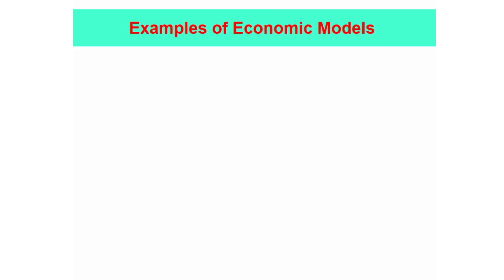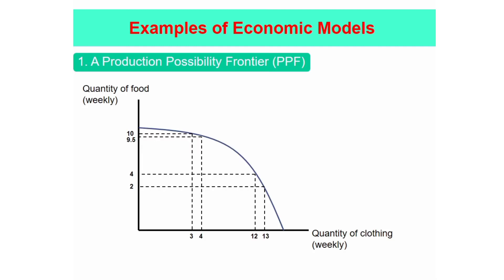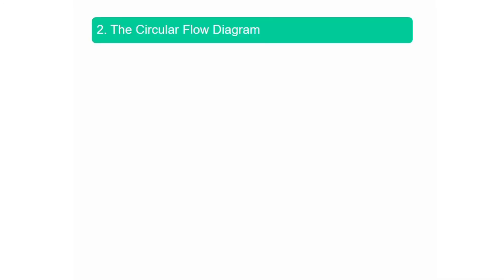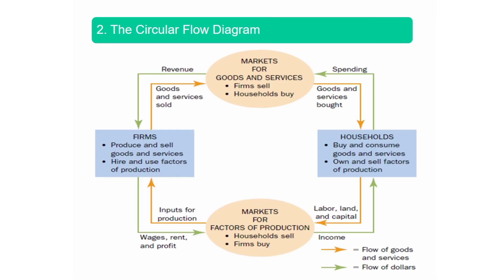From the features of economic models discussed above, the following are examples of economic models: we have the PPF, or the Production Possibility Frontier, and the second one, the Circular Flow Diagram. We will be discussing each of these models in a future video. Thank you for watching.